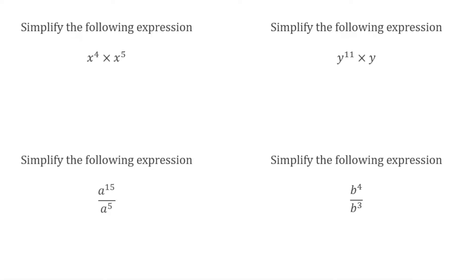For this first practice question, we've got x to the power of 4 times x to the power of 5. Going back to what we talked about earlier, when we multiply powers of the same base, we've got to add the indices. So 4 add 5 is 9, and this would simply be x to the power of 9.